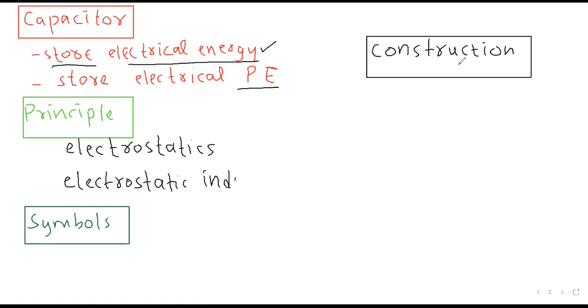یہ دو بنیادی اصول ہیں جن پر capacitor کام کرتا ہے۔ یہ دونوں اصول الگ الگ نہیں بلکہ ایک ہی principle ہے جس پر capacitor work کرتا ہے۔ اس کے بعد ہم symbol کی بات کرتے ہیں۔